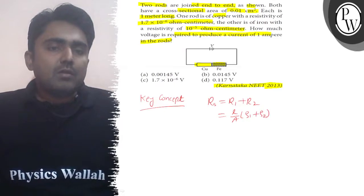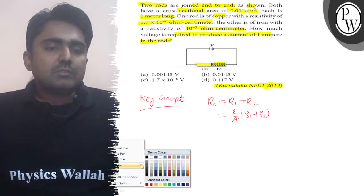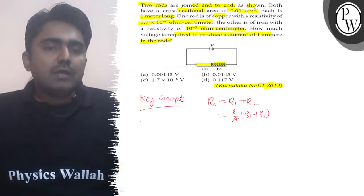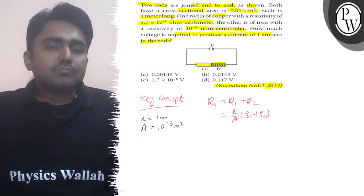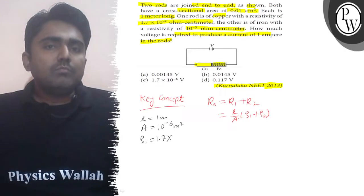The resistance formula is ρL/A. Length would be 1 meter, area given is 0.01 cm², which is 10⁻⁶ m². Resistivity ρ₁ given is 1.7 × 10⁻⁶ ohm-centimeter, centimeter to meter will be 10⁻⁸.